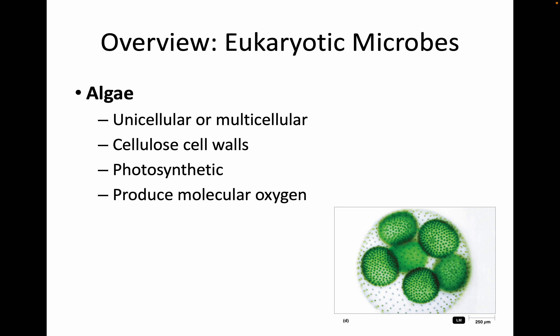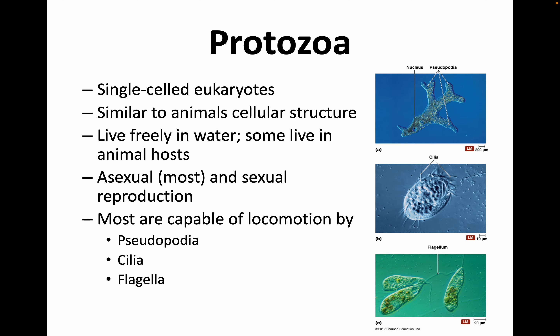Let's talk about some eukaryotic microbes. Algae can be unicellular or multicellular, have cellulose cell walls, are photosynthetic, and produce molecular oxygen. Protozoans are single-celled eukaryotes similar to animals in cell structure. They live freely in water and some have animal hosts. Most are asexual, but some do sexual reproduction, and most are capable of locomotion using pseudopodia, cilia, or flagella.